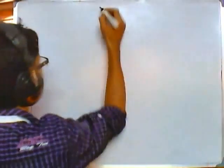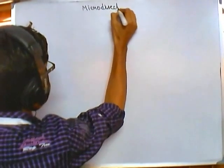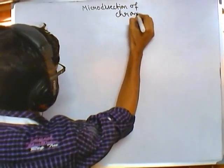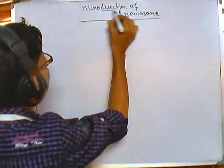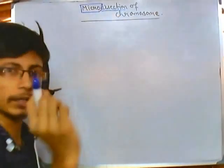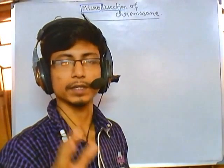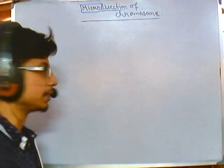Welcome back friends. In this video we'll be talking about micro dissection — a technique we can utilize for analyzing a segment of a chromosome. It's called the micro dissection of chromosome. As the term suggests, micro dissection means dissecting a chromosome in a very miniature level, because chromosomes are very very small. It's not a macro dissection like when we dissect animals.